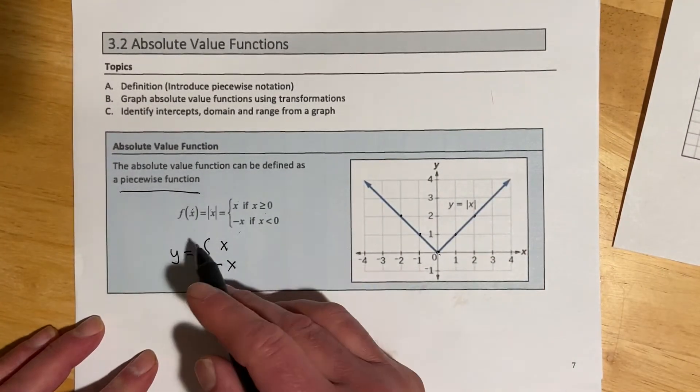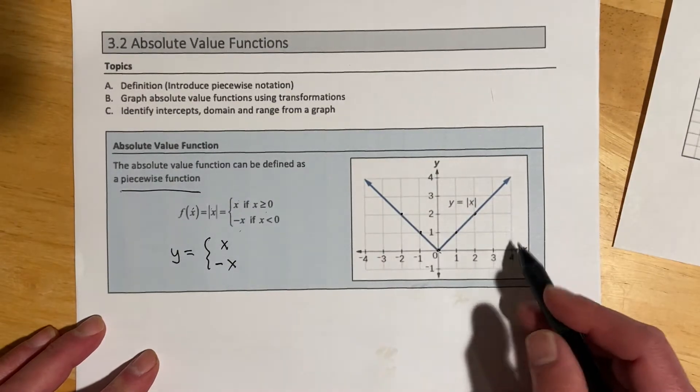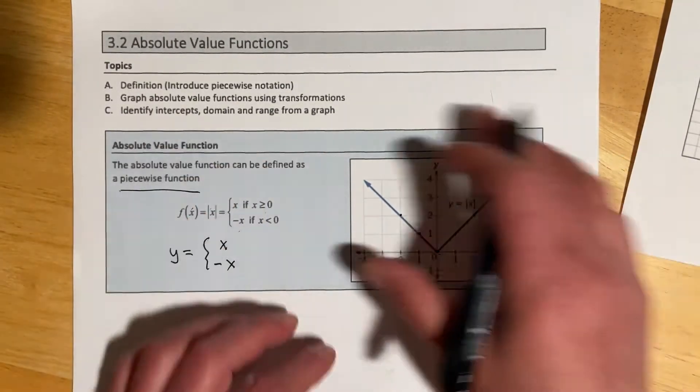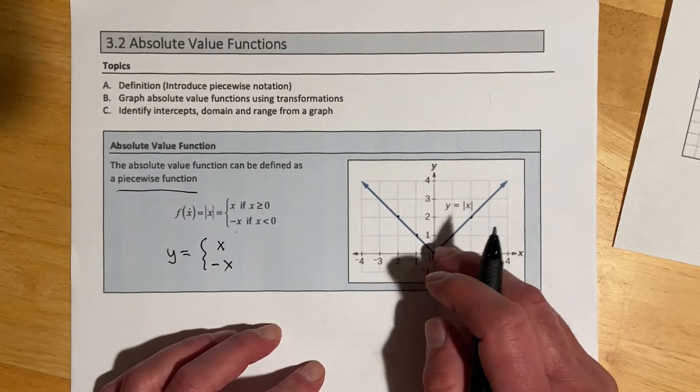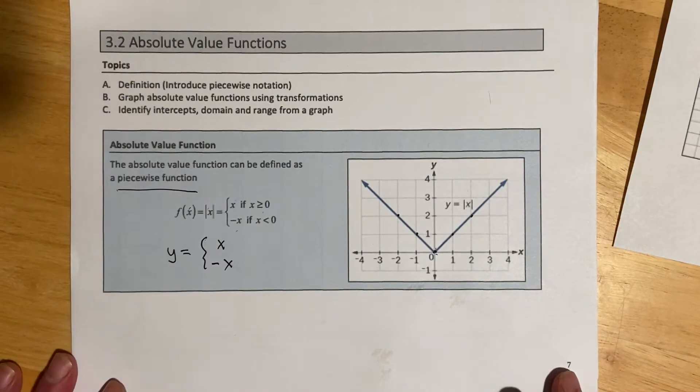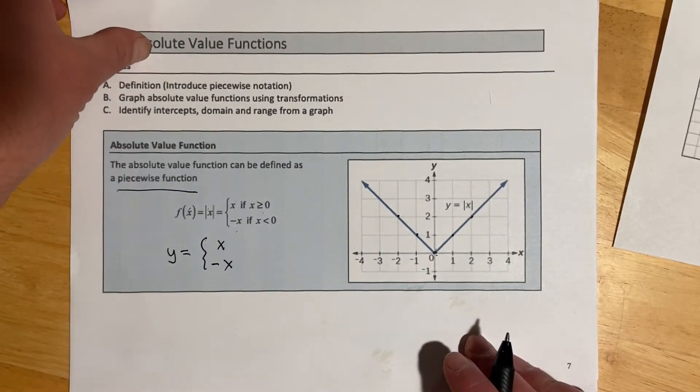Domain is always all real numbers. The range for the parent function is from 0 inclusive to infinity. Let's see what transformations will look like with these.